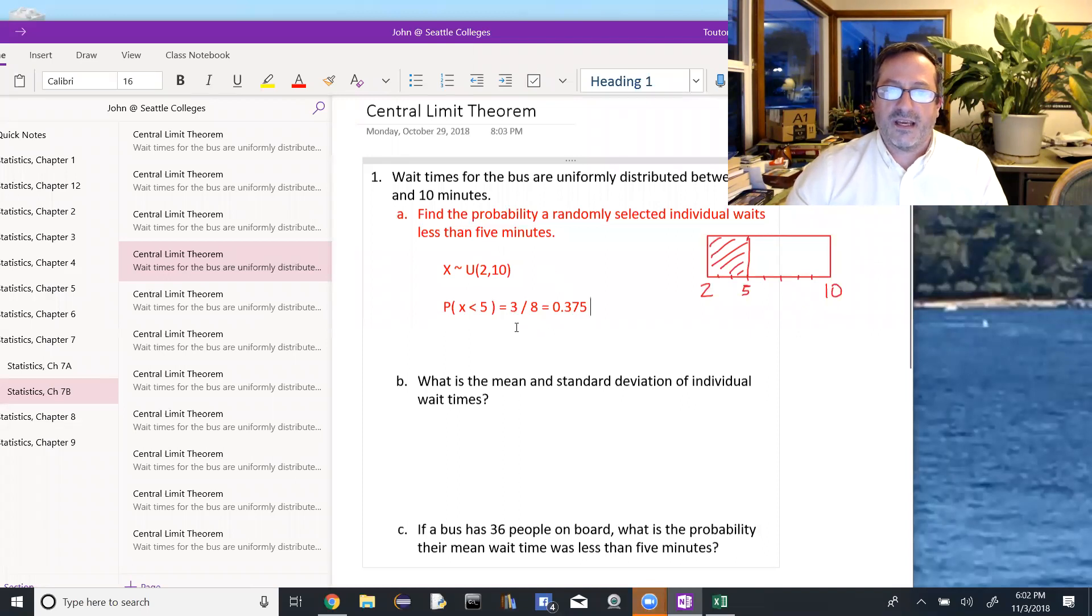So again, with the uniform distribution, we have the rectangular continuous distribution, and probability x is less than 5, the width is 3, the height is 1 eighth, so 3 eighths or 0.375.